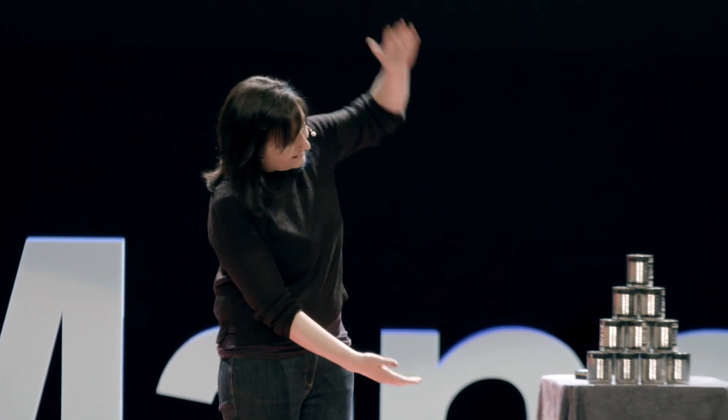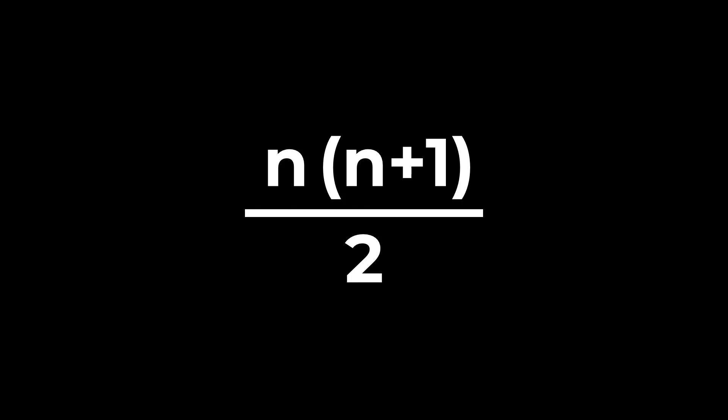But if I had a stack that was, say, twenty cans high, I would have twenty plus one, twenty-one cans in each pair. And twenty divided by two is ten pairs of cans. So I'd have 210 cans altogether. And that means I've got a pattern for this. I know that the number of cans divided by two times the number of cans plus one will always give me the total number of cans. And this is the way that you see this formula often written.